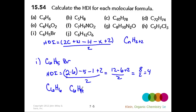Let's calculate the hydrogen deficiency index for C6H5Br. Our HDI equals (2×6 − 5 ...) — we have six carbons and five hydrogens, and we'll also account for the bromine halogen.